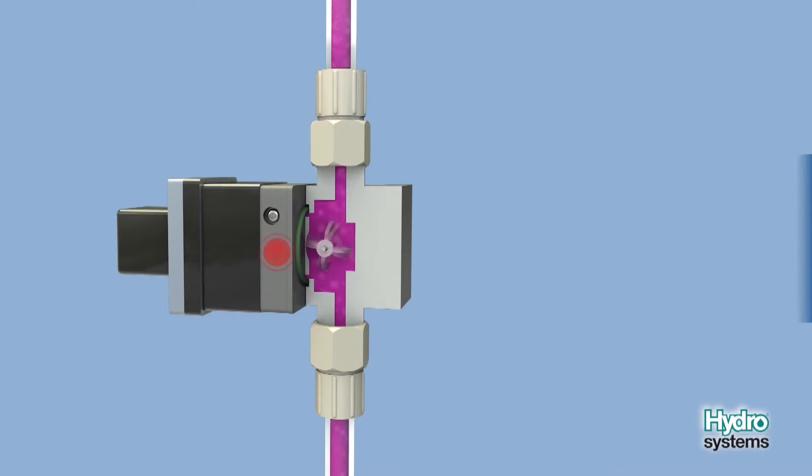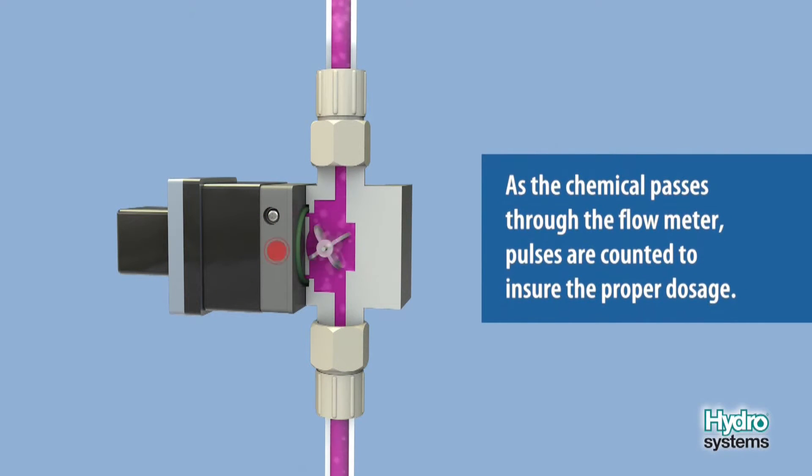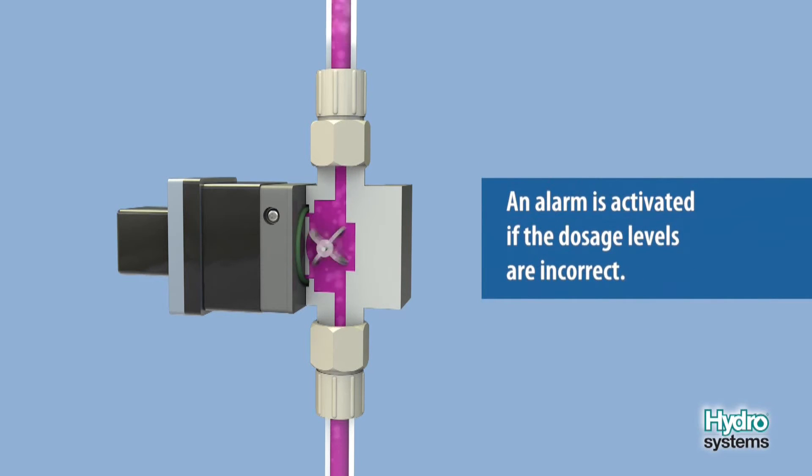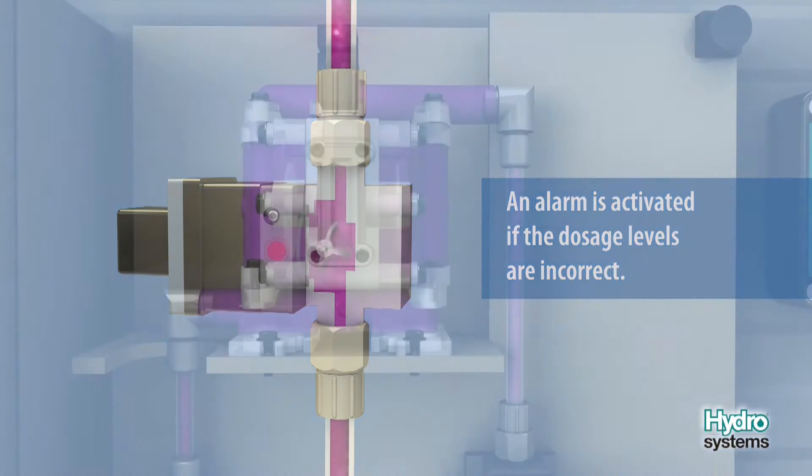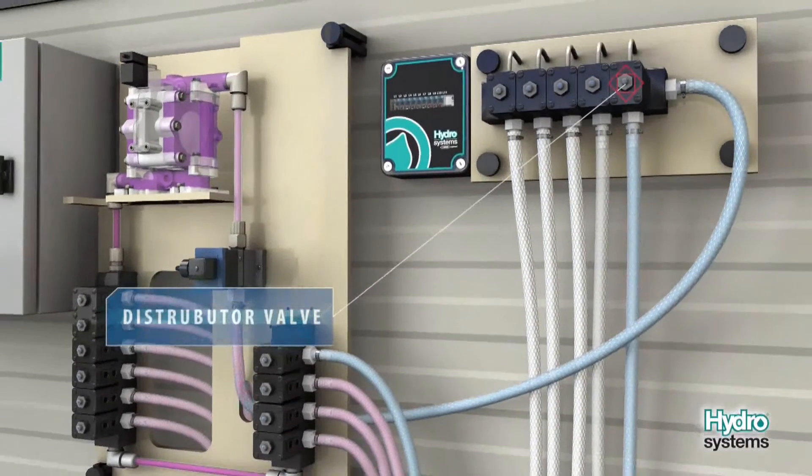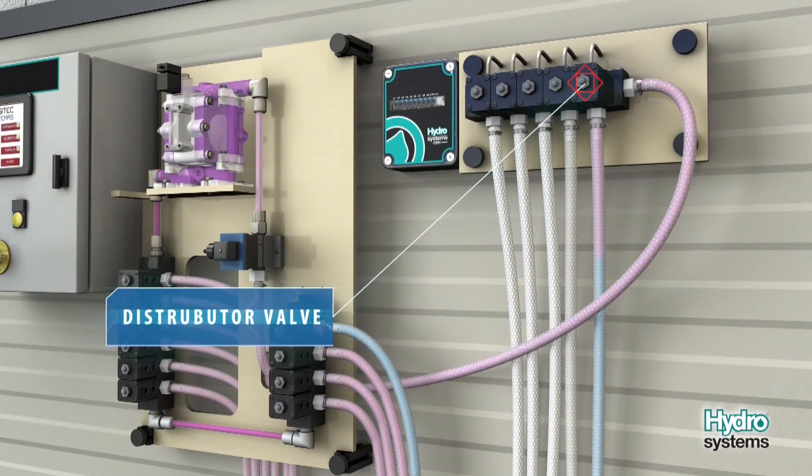As the chemical passes through the flow meter, pulses are counted to ensure the proper amount of chemical is dosed. If the desired number of pulses are not received in an appropriate time period, an alarm is activated. As the product reaches the distributor valve, it is dispensed to the machine.